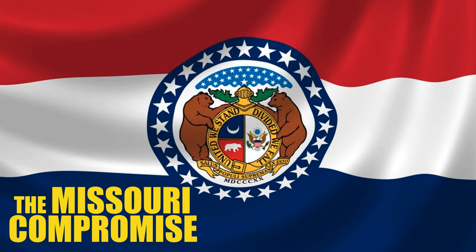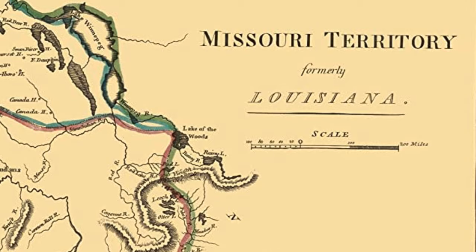The Missouri Compromise was a deal between northern and southern states that admitted Missouri and Maine to the Union and preserved a balance of power in Congress. In 1819, the territory of Missouri applied for statehood in the United States.